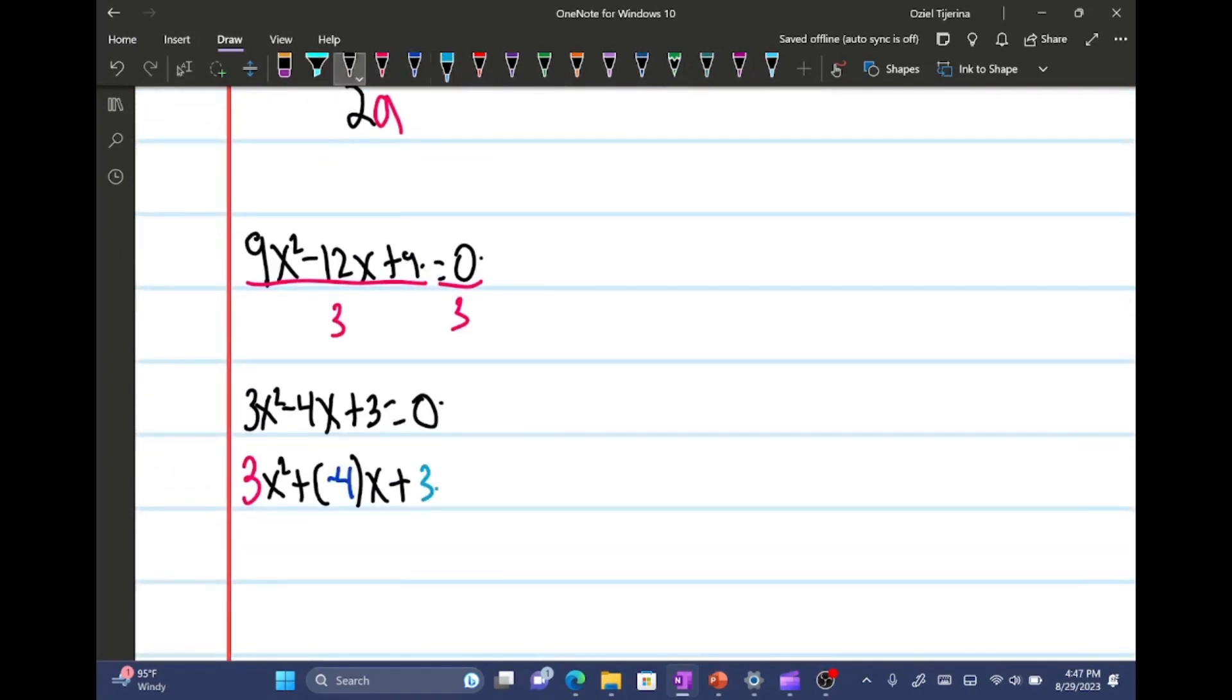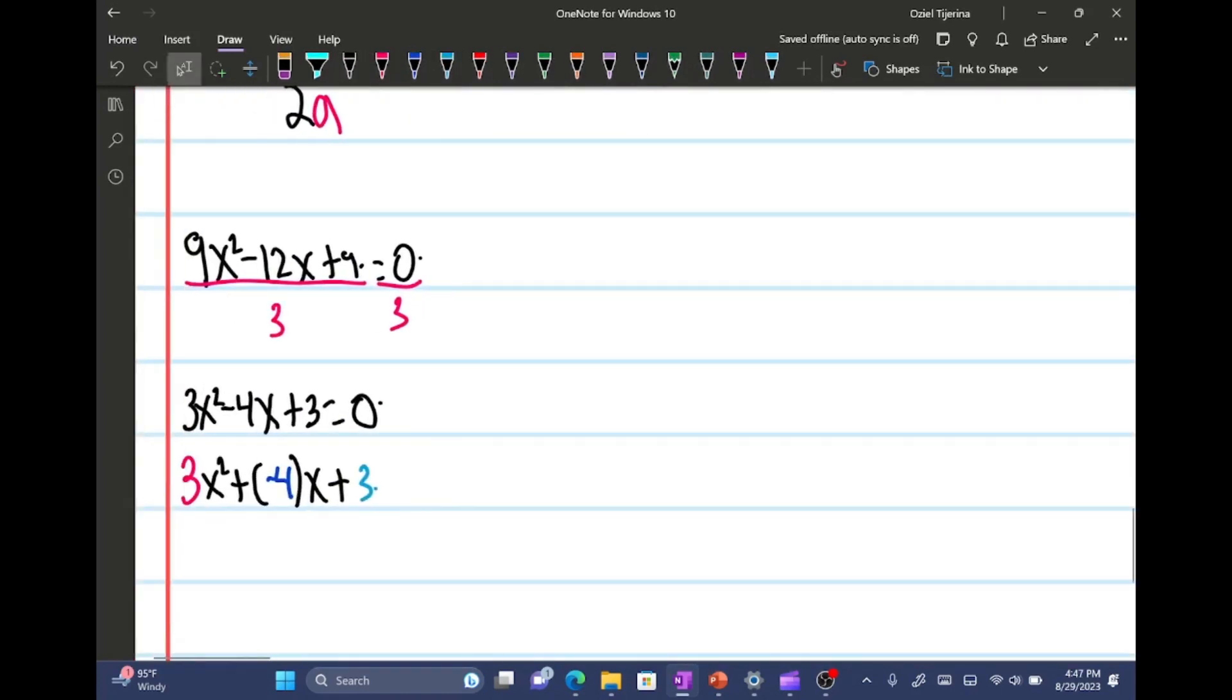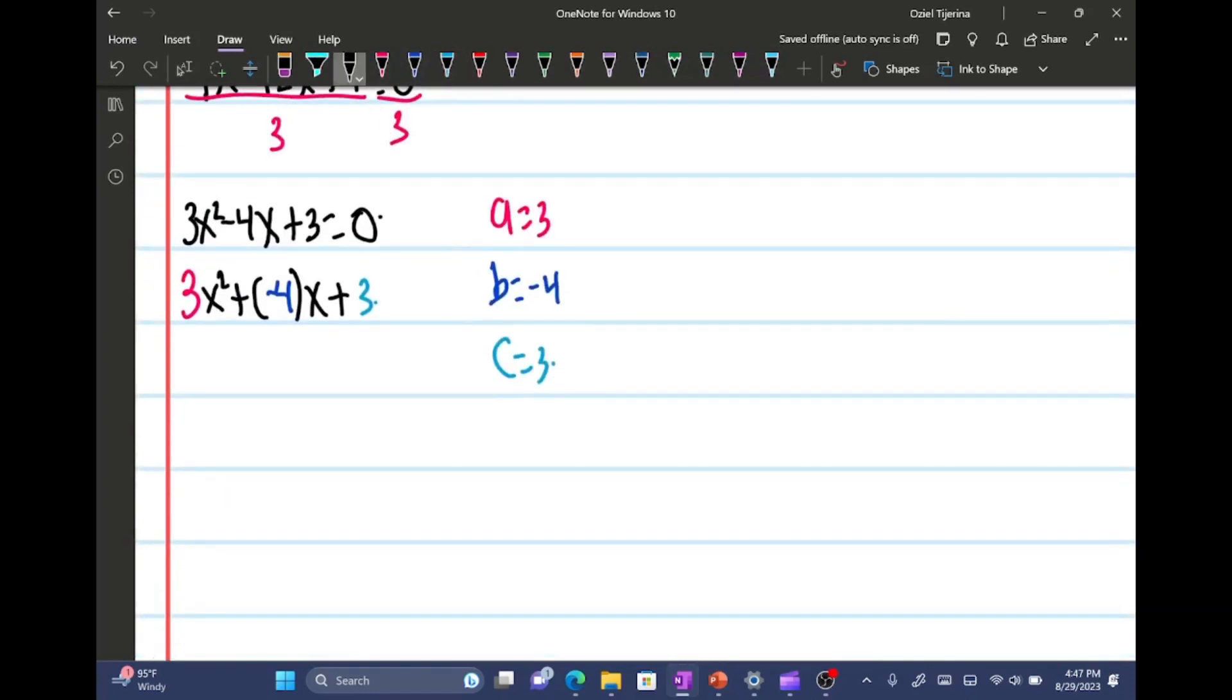And now using the quadratic formula, I'm gonna go ahead and, like I said, a is equal to 3, b is equal to negative 4, and then c is equal to 3. Okay, so now let's go ahead and do this.